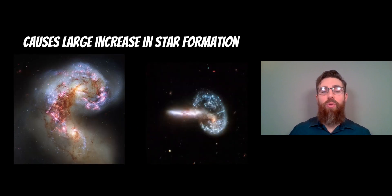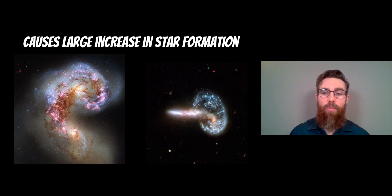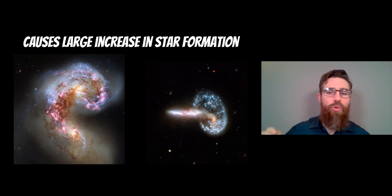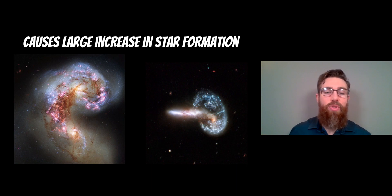The actual mergers or collisions cause a huge increase in star formation. Here you've got two images of galaxies colliding taken by the Hubble telescope. You can see some very bright blue regions and some pinky purple regions. Those are young bright stars which are the blue, and then you've got the ionized hydrogen regions like the nebulas around those stars.